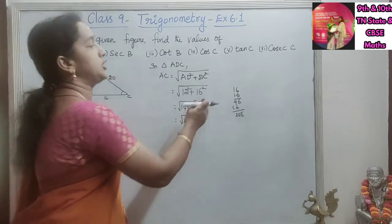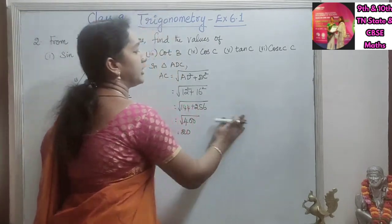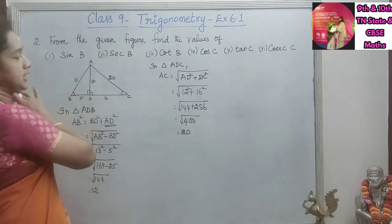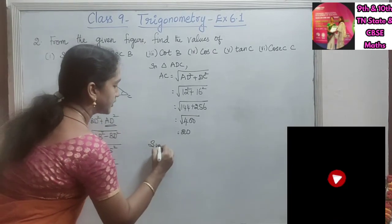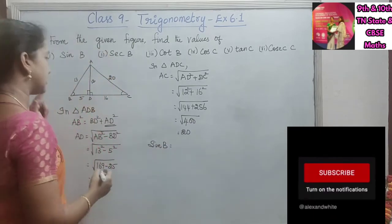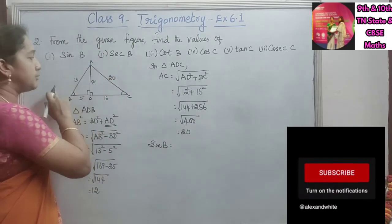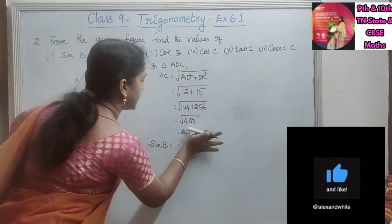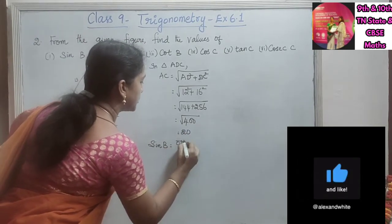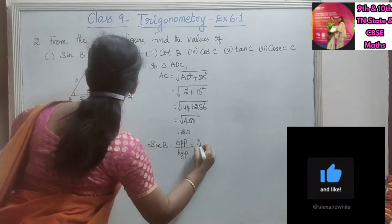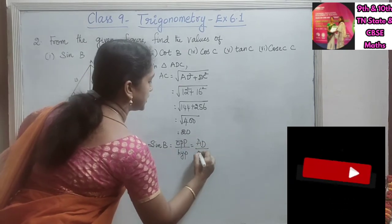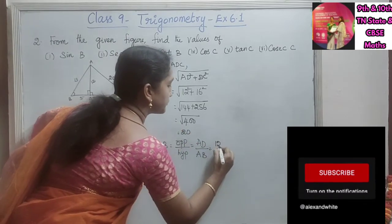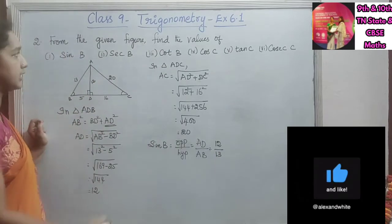Now, whatever ratios we are asked to find, we can find them since we know all three sides of the triangle. First, sine B. Sine B is opposite by hypotenuse. The opposite side here is AD, and the hypotenuse is AB. So sine B is 12 by 13.